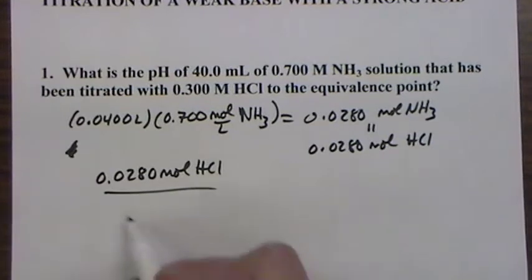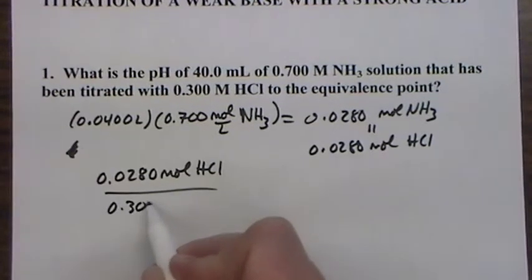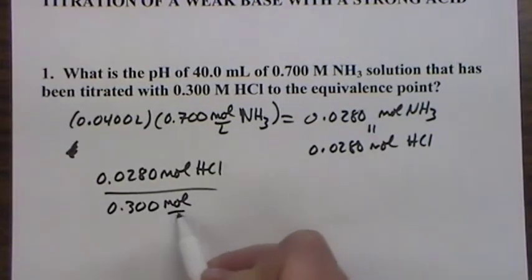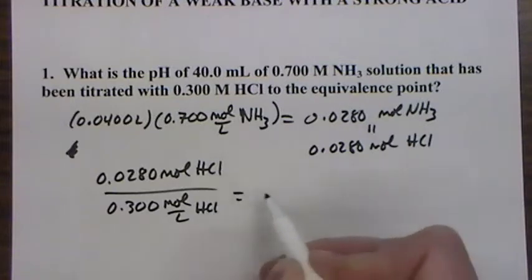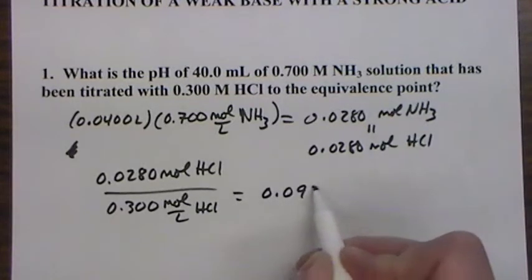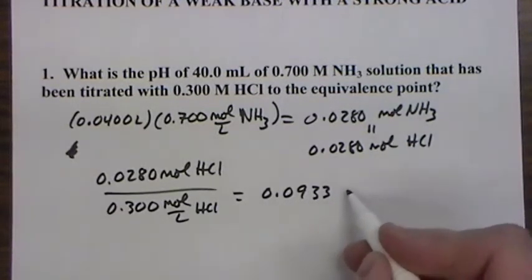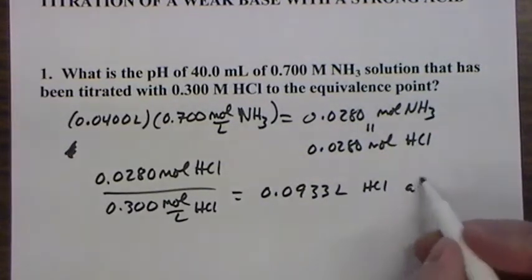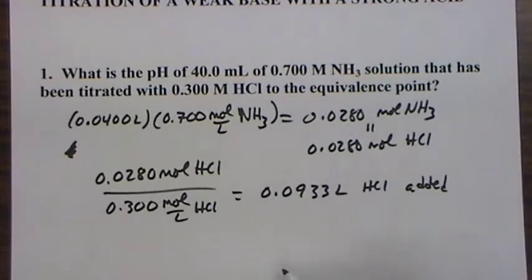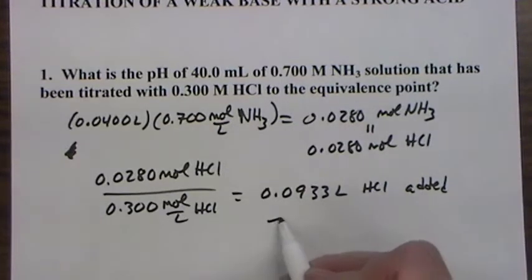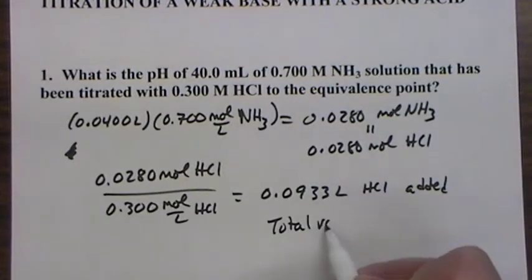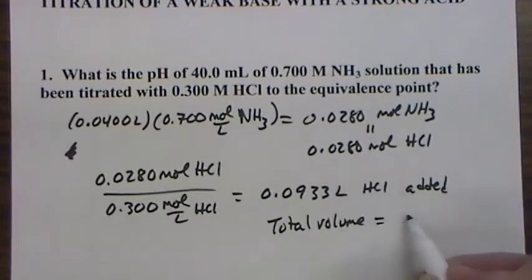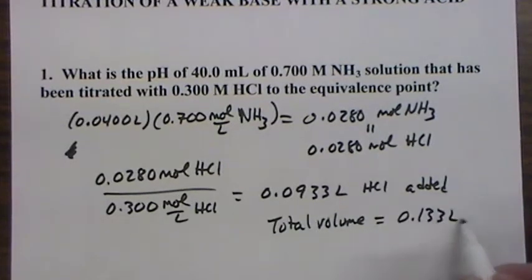And we know that we're going to need the same number of moles of HCl. That number of moles of HCl divided by its concentration will give us the volume of acid that will be added. That gives us a total volume equal to 0.133 liters. We'll need that later.